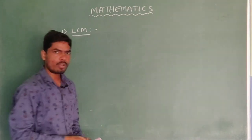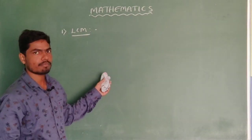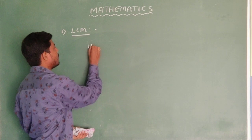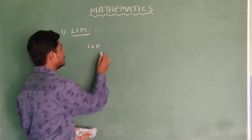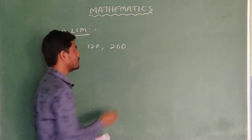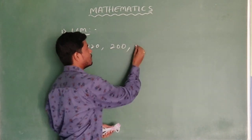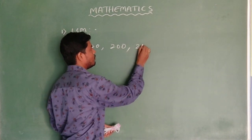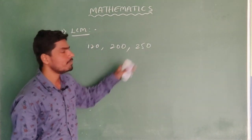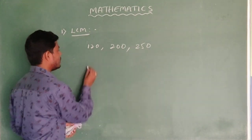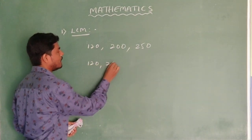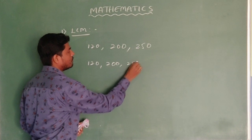One more example to find the LCM for bigger numbers. 120 is one number, 200 is another number. Take one more number also: 250. How to find the LCM of these three numbers? Follow the same steps here also for 120, 200, and 250.